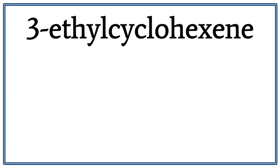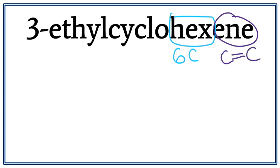Let's draw the structure for 3-ethyl-cyclohexene. Hex right here tells us that there are 6 carbons present in the longest carbon chain. Ene here tells us that there is a double bond present between the carbons.